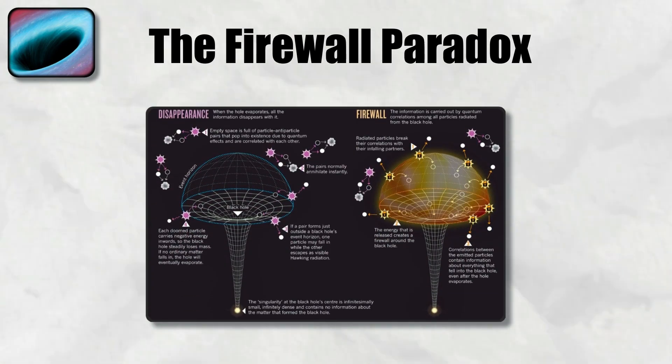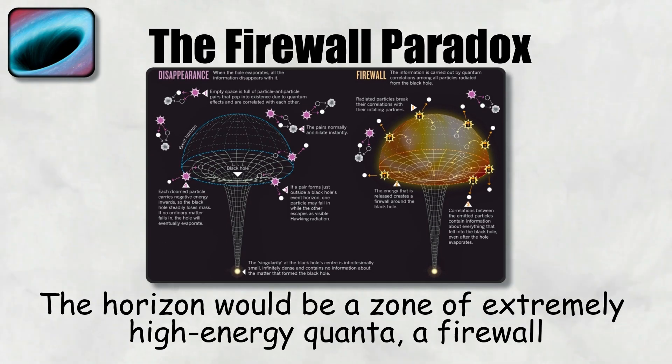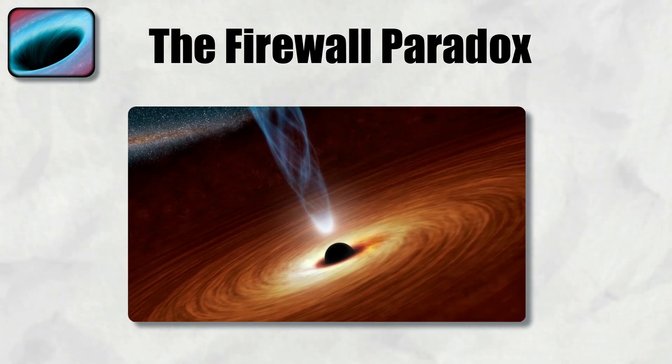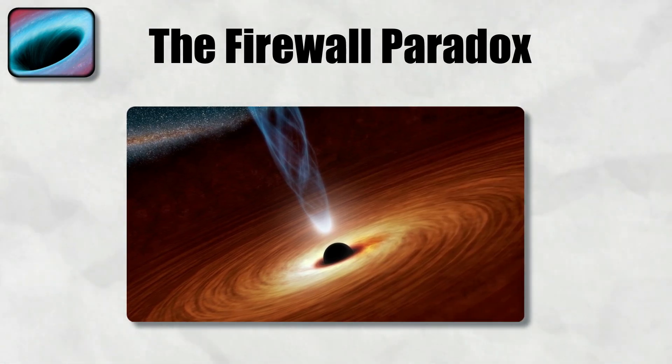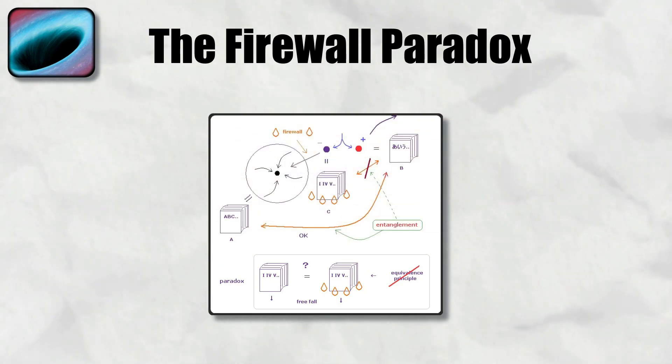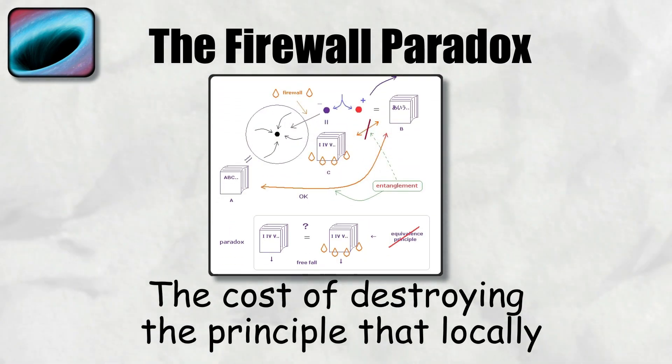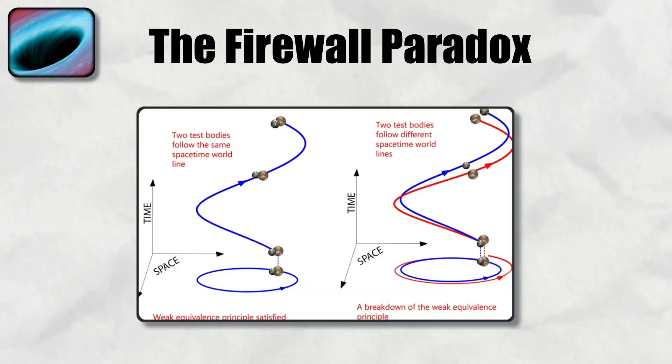The AMPS proposal was that the equivalence principle breaks down at the horizon. Instead of empty space, the horizon would be a zone of extremely high-energy quanta, a firewall. Any object falling in would be incinerated instantly at the boundary, rather than passing smoothly through. This preserves unitarity and information conservation, but at the cost of destroying the principle that locally, physics near a small region of spacetime looks like special relativity.